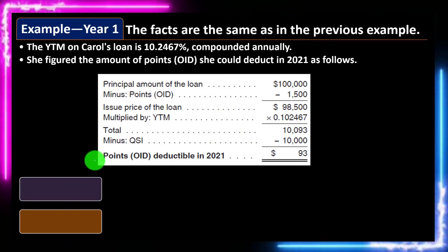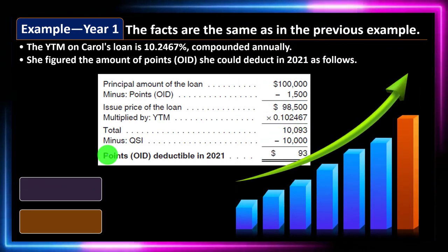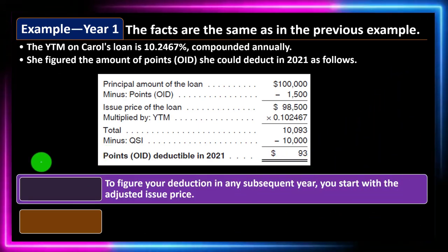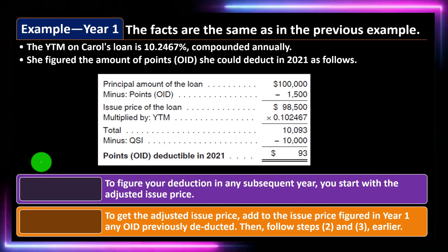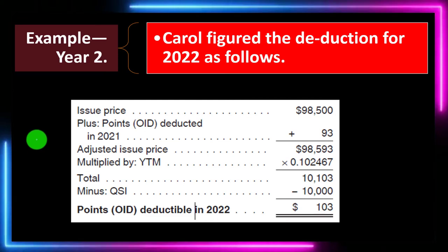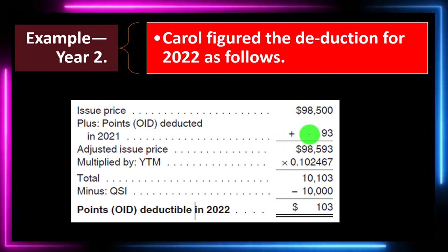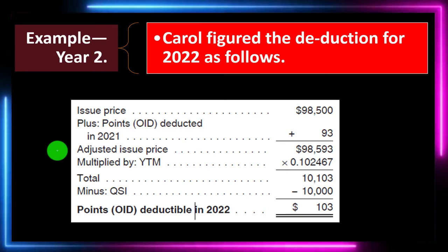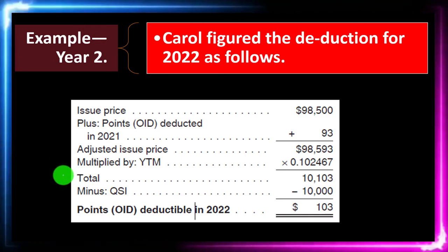Notice that either method gives a relatively small amount because you still have to allocate it over the life of the loan. To figure your deduction in any subsequent year, start with the adjusted issue price: add to the issue price from year one any OID previously deducted, then follow steps two and three. Example — Year 2: Carol figures her deduction for 2022 as follows: issue price $98,500 plus OID deducted in 2021 of $93 = adjusted issue price of $98,593, multiplied by the YTM of 0.102467.